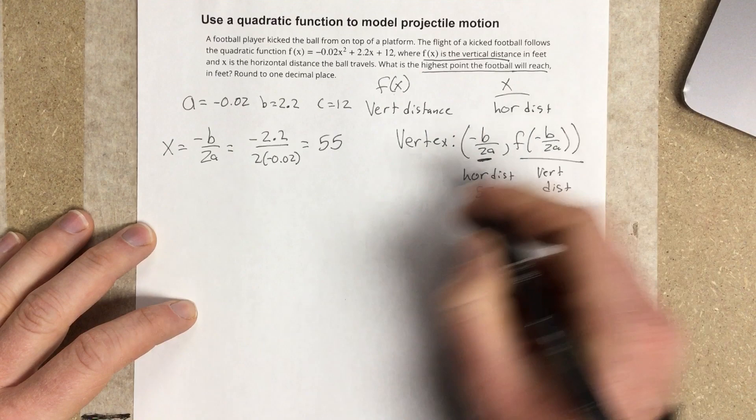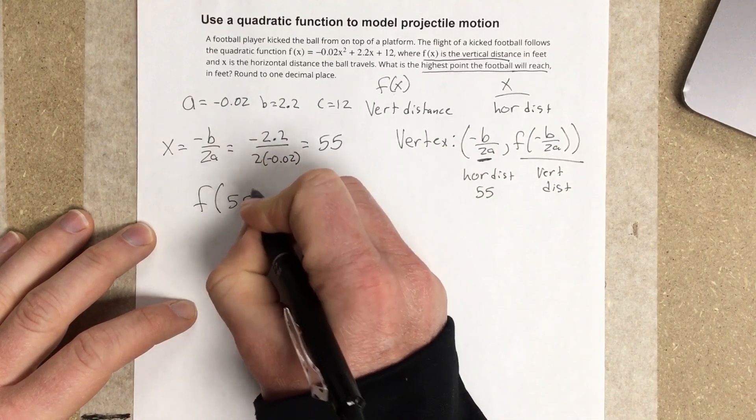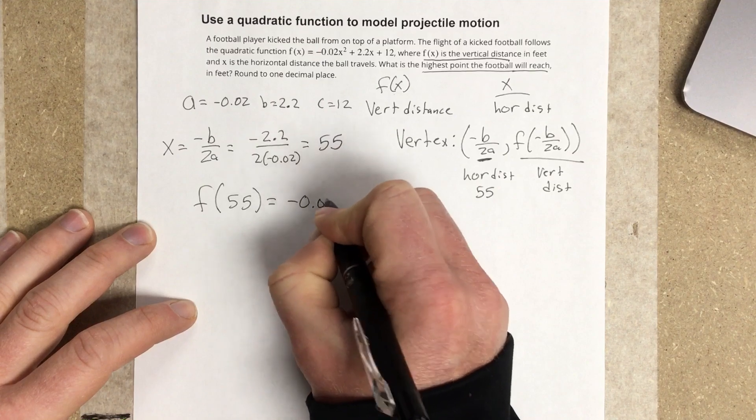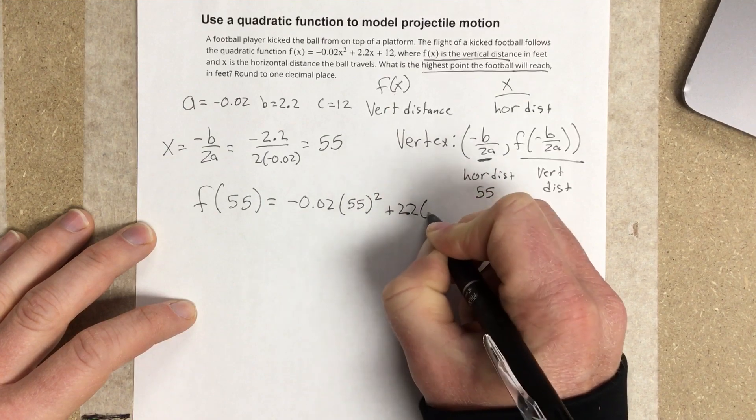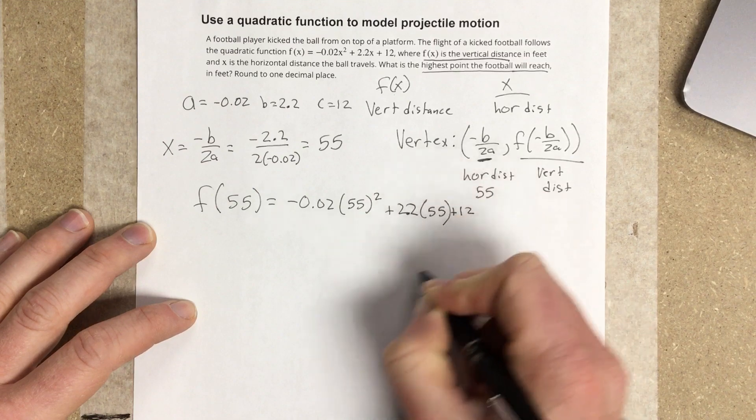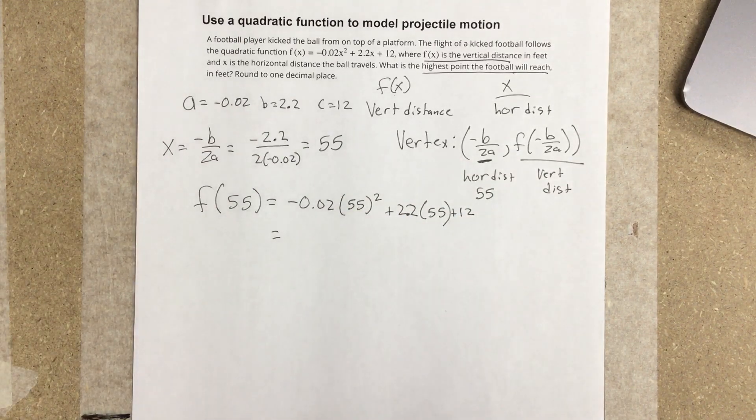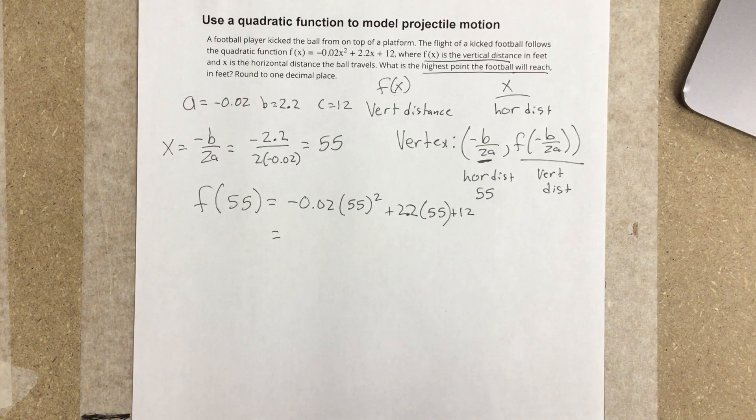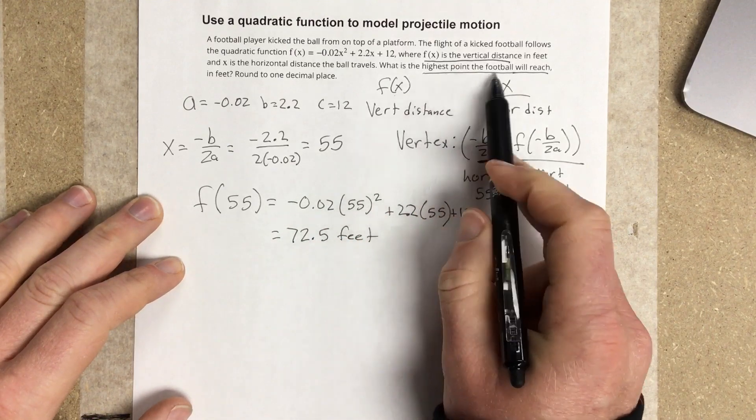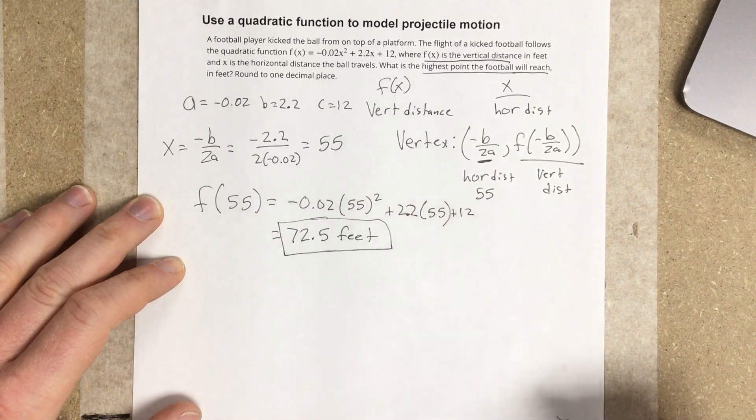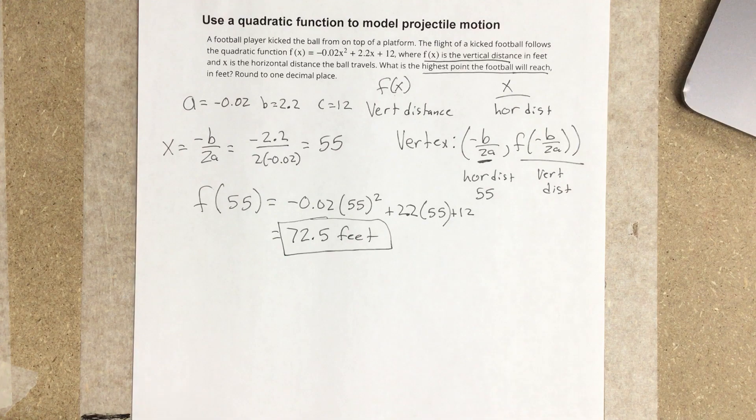I need to plug that into this f function. f(55) is going to equal negative 0.02 times 55 squared plus 2.2 times 55 plus 12. So I get 72.5 feet. The maximum height the football reaches is 72.5 feet in the air. So anytime we talk max and min, we're talking vertex for quadratics.